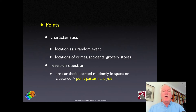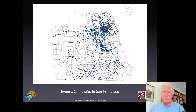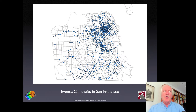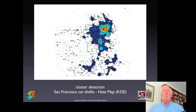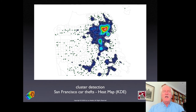Point pattern analysis is concerned with that question. For example, this map shows car thefts in San Francisco as points. We're interested in whether there's any structure — are more car thefts occurring in particular areas? One simple device many of you may be familiar with is a heat map, which picks up concentrations of higher density of these events. Point pattern analysis finds concentrations or other structure in the allocation of points over the landscape that differs from random.